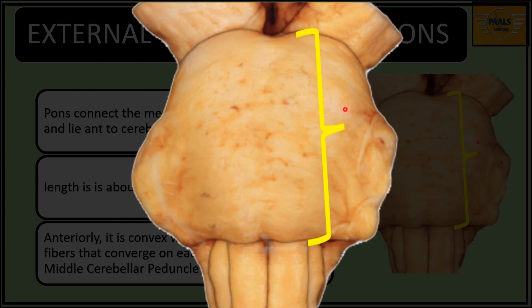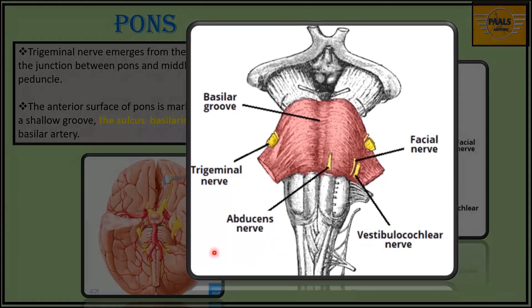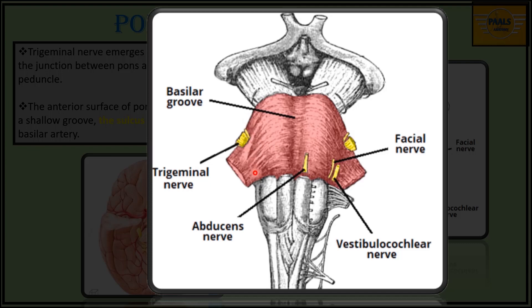The anterior surface is convex with fibers running transversely to either side, forming a bundle at each side called the middle cerebellar peduncle. On the anterior surface, towards the junction of the pons and the middle cerebellar peduncle, we see the exit of the trigeminal nerve, and also a midline groove called the sulcus basilaris.